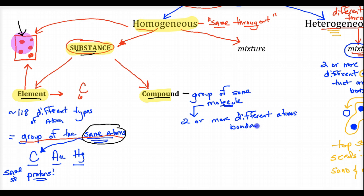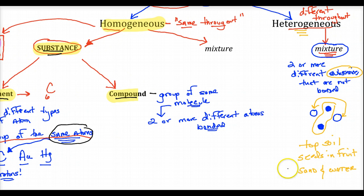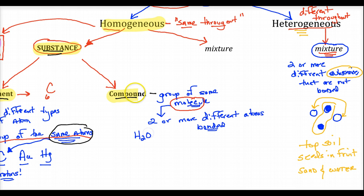Notice that's different from a mixture. A mixture is two or more different substances — elements or compounds — that are not bonded, just in close proximity. A molecule is two or more different atoms bonded. For example, water is H₂O. In a particle diagram, one oxygen and two hydrogens bonded together — that's a molecule.